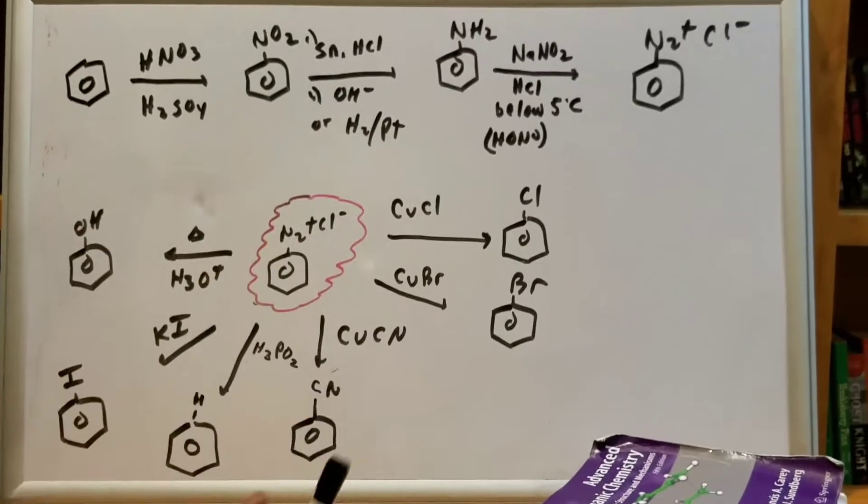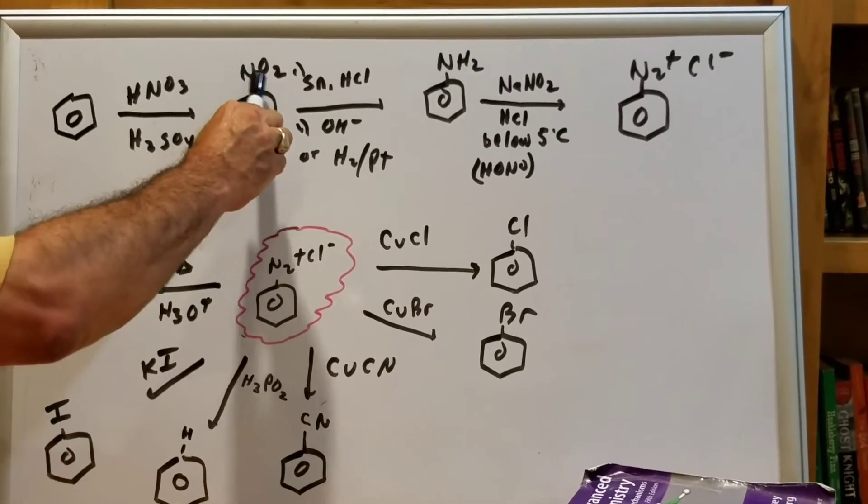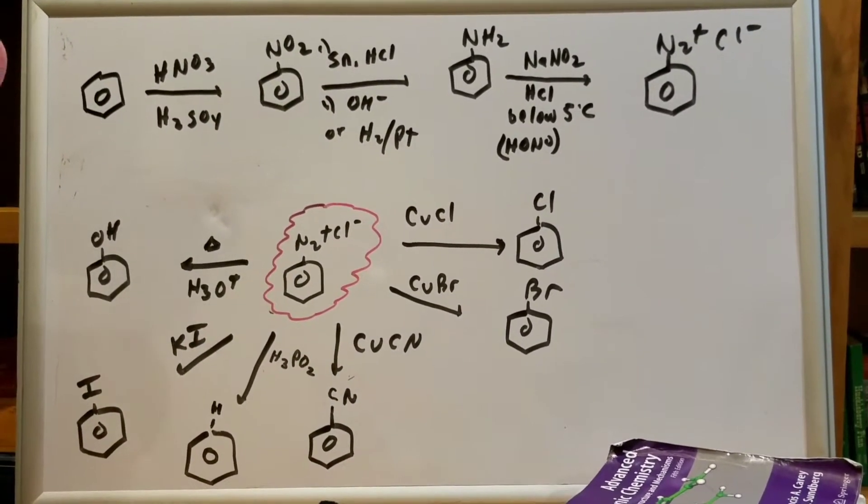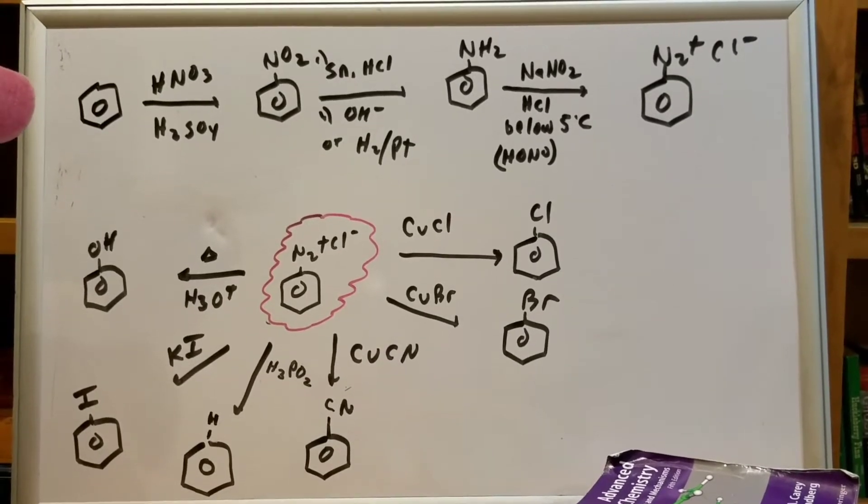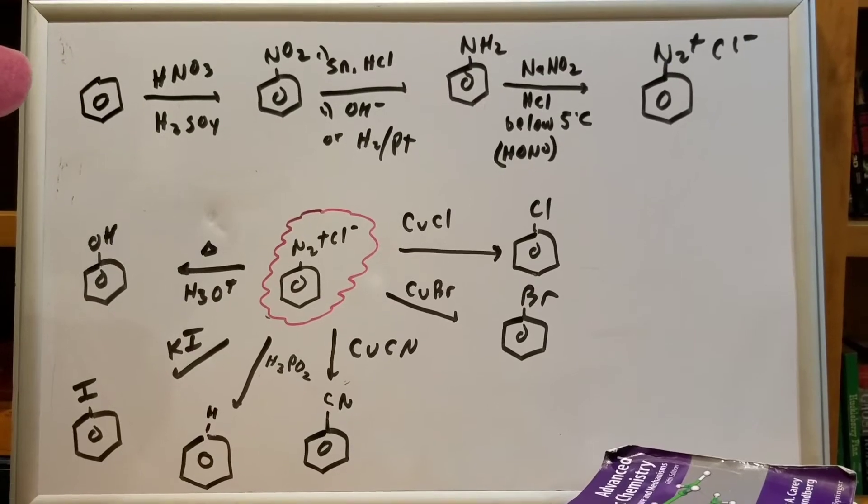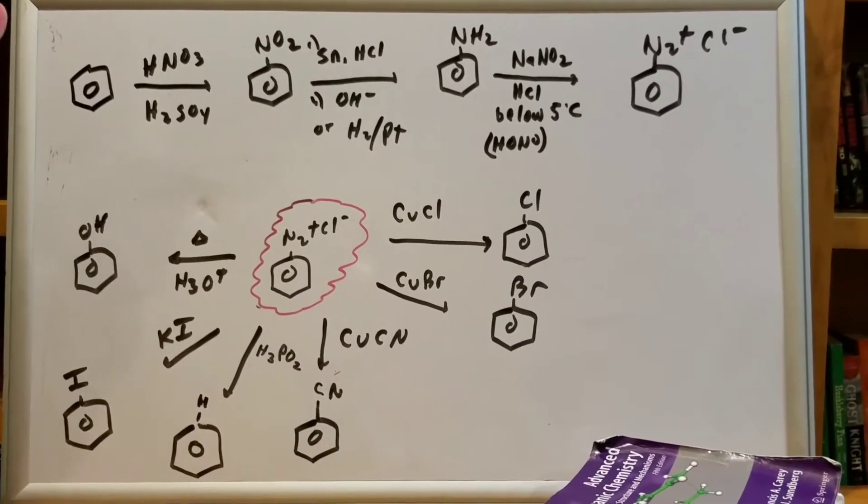The second step, what I did was called a reduction. In a reduction, I'm going to transform an NO2 group into an NH2 group. And I can do this several ways, but one of which I can use tin, HCl, and base, or I could have used iron and HCl and base, or hydrogen and platinum.